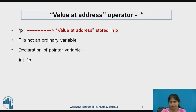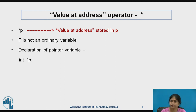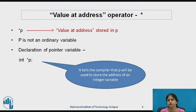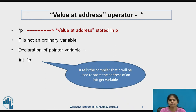Let's see the declaration: int *p. Here p is the name of the variable, not *p. Star is used to indicate that p is a special type of variable — a pointer variable. This tells the compiler that p will be used to store the address of an integer variable. In other words, we say that p points to an integer.